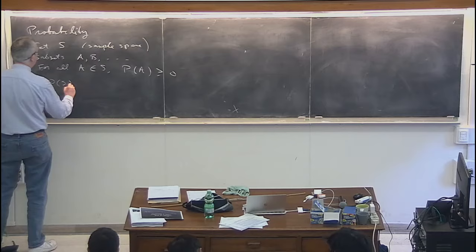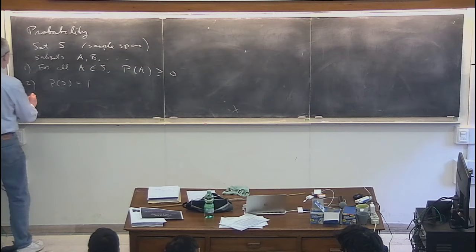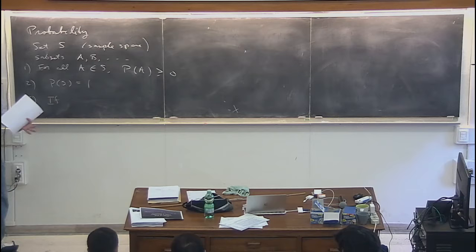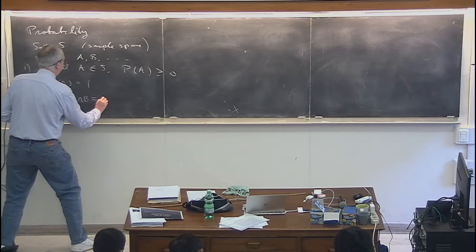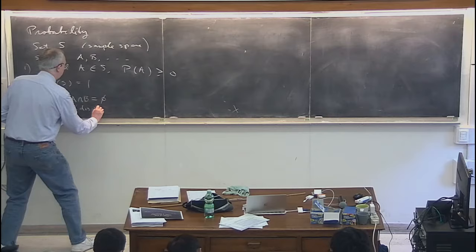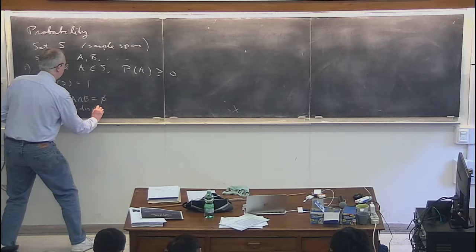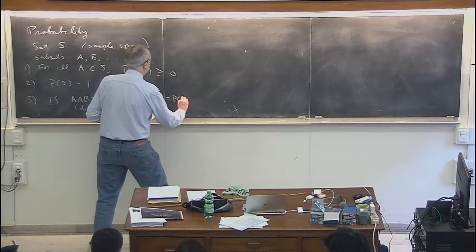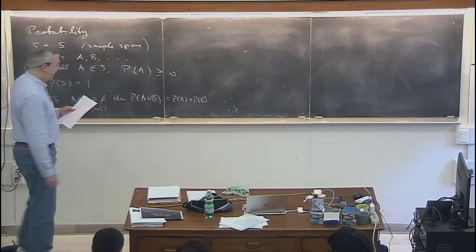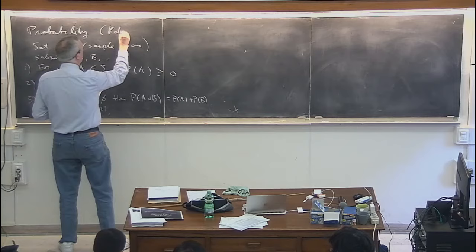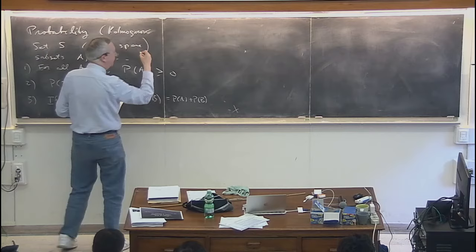The sample space is one of the subsets, and I assign for the probability of the sample space the value one. The third axiom says that if I have two subsets that are disjoint — the intersection of A and B is equal to the null set — then the probability associated with the union of those two subsets is simply equal to the sum of the two corresponding probabilities. That is Kolmogorov, 1930-something. The first mathematical definitions of probability were from the 1600s in the context of gambling, but the axiomatic definition wasn't until the 20th century.